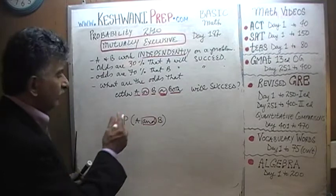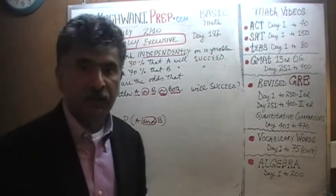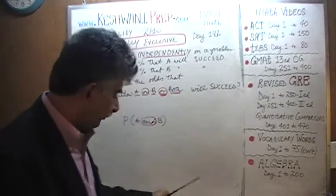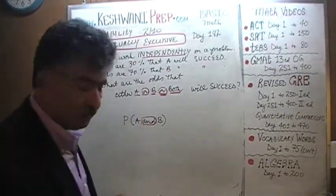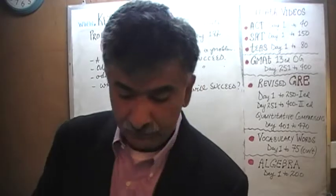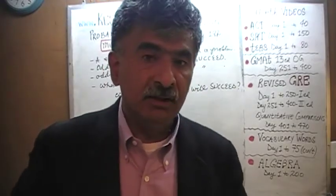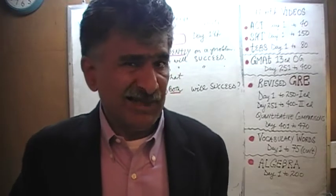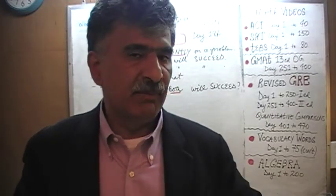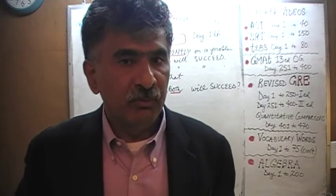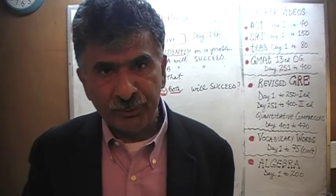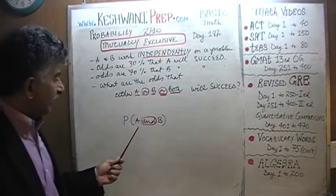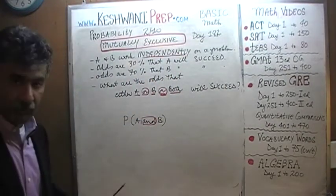Yesterday the question was: what are the odds if you put person A in one room and person B in another room, and they both work on the problem independently — one has nothing to do with the other. Whether or not A will succeed has absolutely no bearing on the performance of the other, and vice versa. If that is the case, we say the two events are independent.